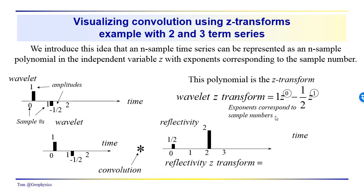We use the same idea: Z is raised to the power corresponding to the sample number — Z to the zero, Z to the one, Z squared, Z cubed, and so on. Our reflectivity Z-transform doesn't have a value for the second sample where the sample number equals one, so we just have coefficients one-half and two: one-half Z to the zero plus two Z squared. That is the Z-transform of the reflectivity sequence.